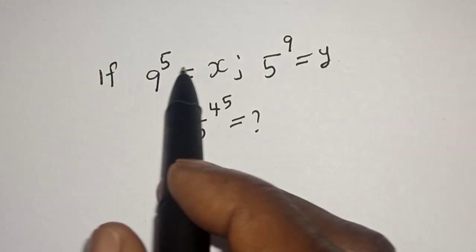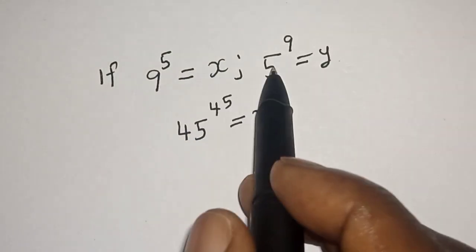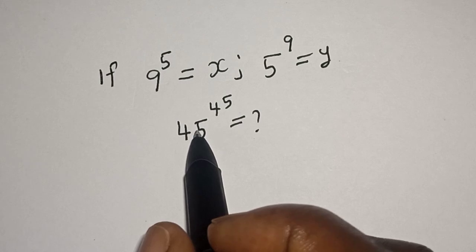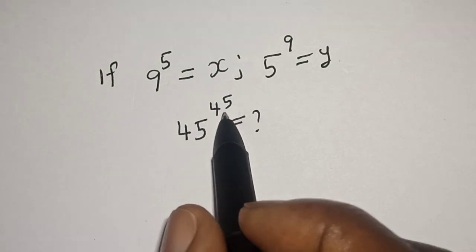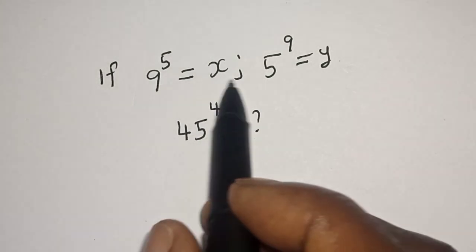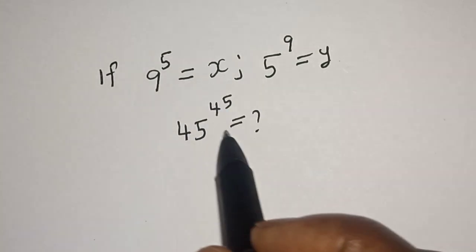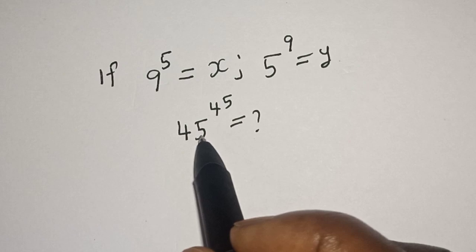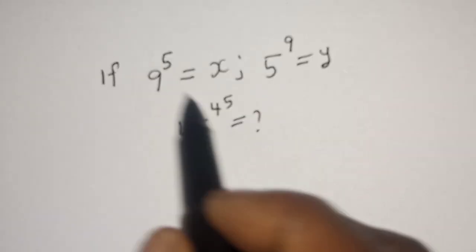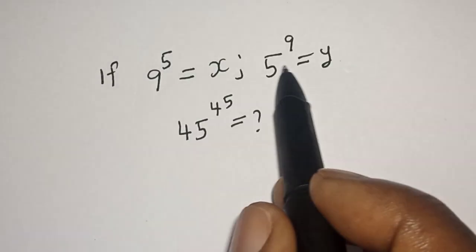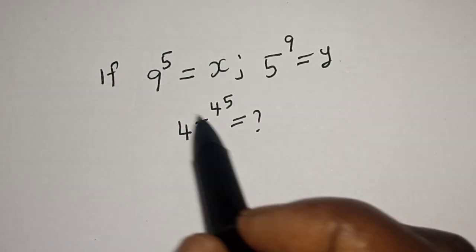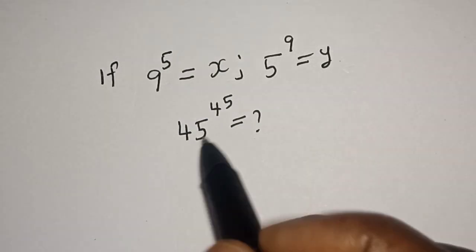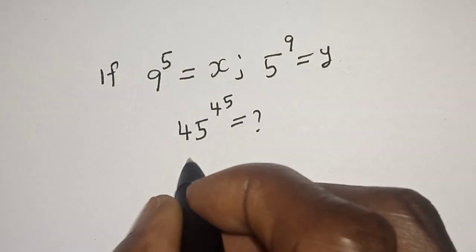If 9 raised to power 5 is equal to x and 5 raised to power 9 is equal to y, what is the value of 45 raised to power 45? Hi everyone, welcome to my class. In this class we want to find the value of 45 raised to power 45 from this equation. Please don't forget to like, share, comment, and subscribe.